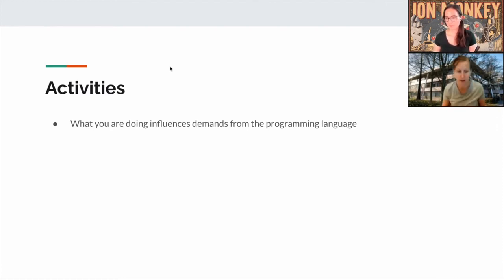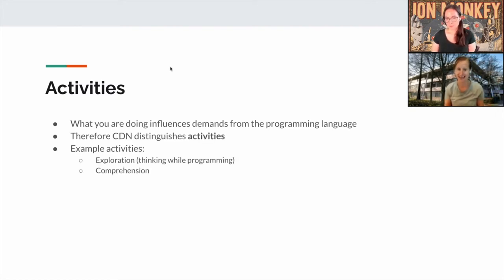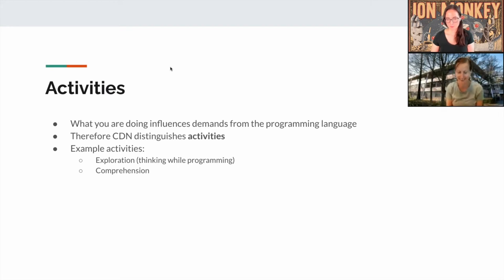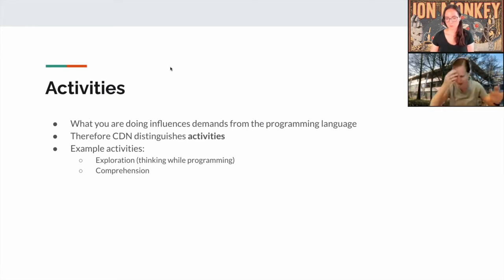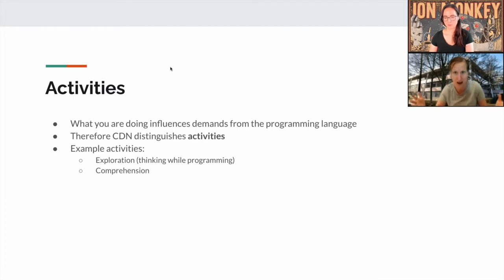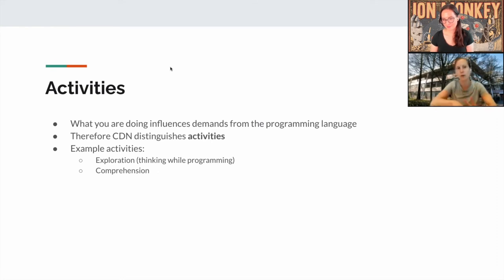Activities are things you do in a codebase. One activity the framework describes is exploration — you're sketching with code, thinking while programming, not really knowing how you'll implement something. In exploration, viscosity is very important; you don't want to be hindered by the compiler. But in comprehension — trying to understand code that someone else wrote, or that you wrote a long time ago — other dimensions play a role. You might want warnings because while comprehending, you make a small change and want the compiler to tell you something is wrong. So different activities put different demands on the dimensions.